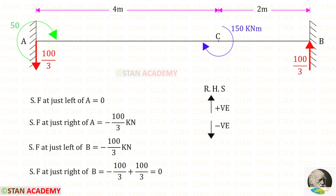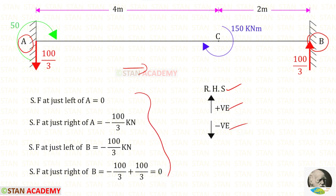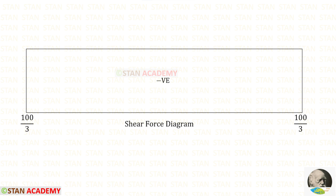Now let us find the shear force values. Moving from point A towards point B, we use the right-hand side rule: upwards is positive and downwards is negative. Applying this rule, we can determine the shear force values. Here you can see the shear force diagram.